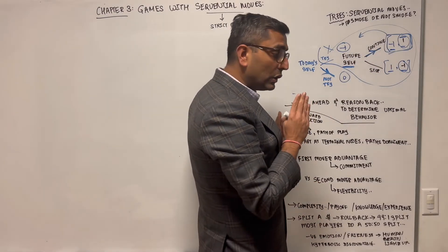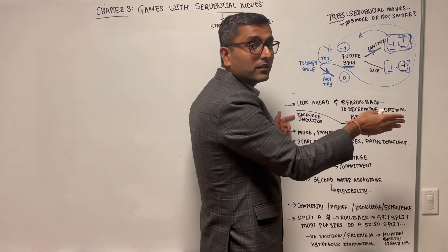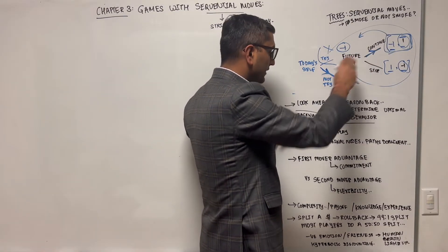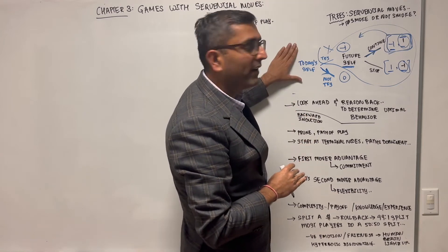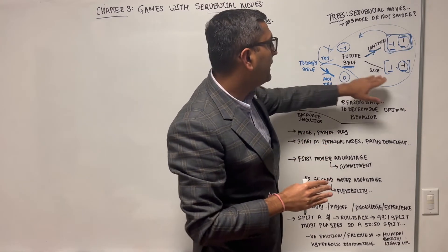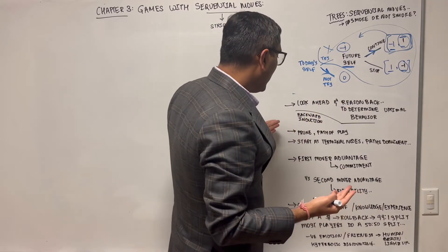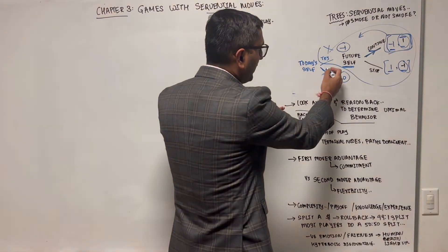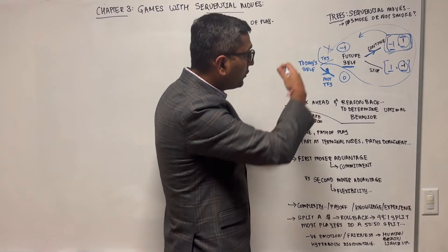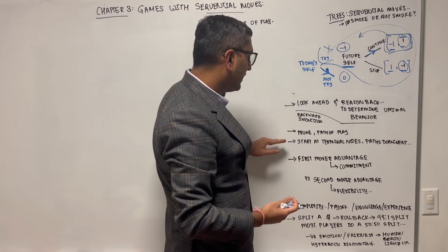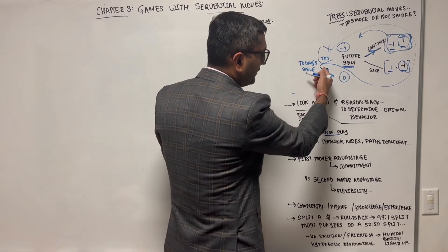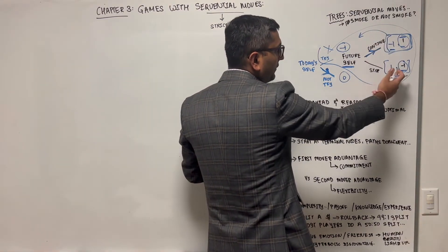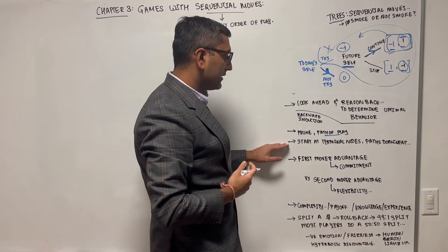This is backward induction: you look forward to find out what would happen, then reason backwards to say this path isn't good for me. You're able to make better decisions by finding out payoffs at every step. In summary: look ahead and reason backwards to find the optimal path, draw it with an arrow, prune irrelevant steps, and start from terminal nodes working backwards.